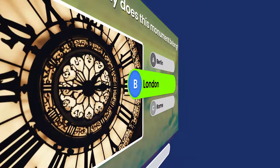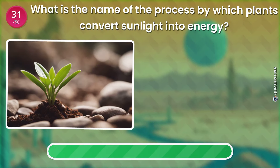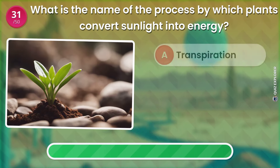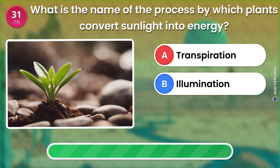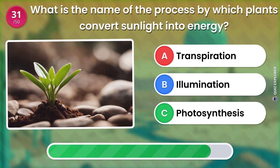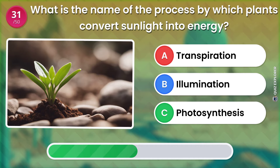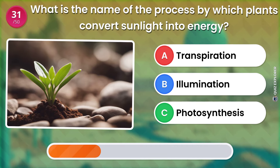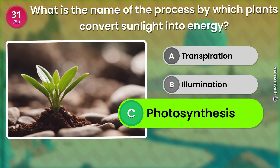What is the name of the process by which plants convert sunlight into energy? Transpiration. Illumination. Photosynthesis. The answer is: Photosynthesis.